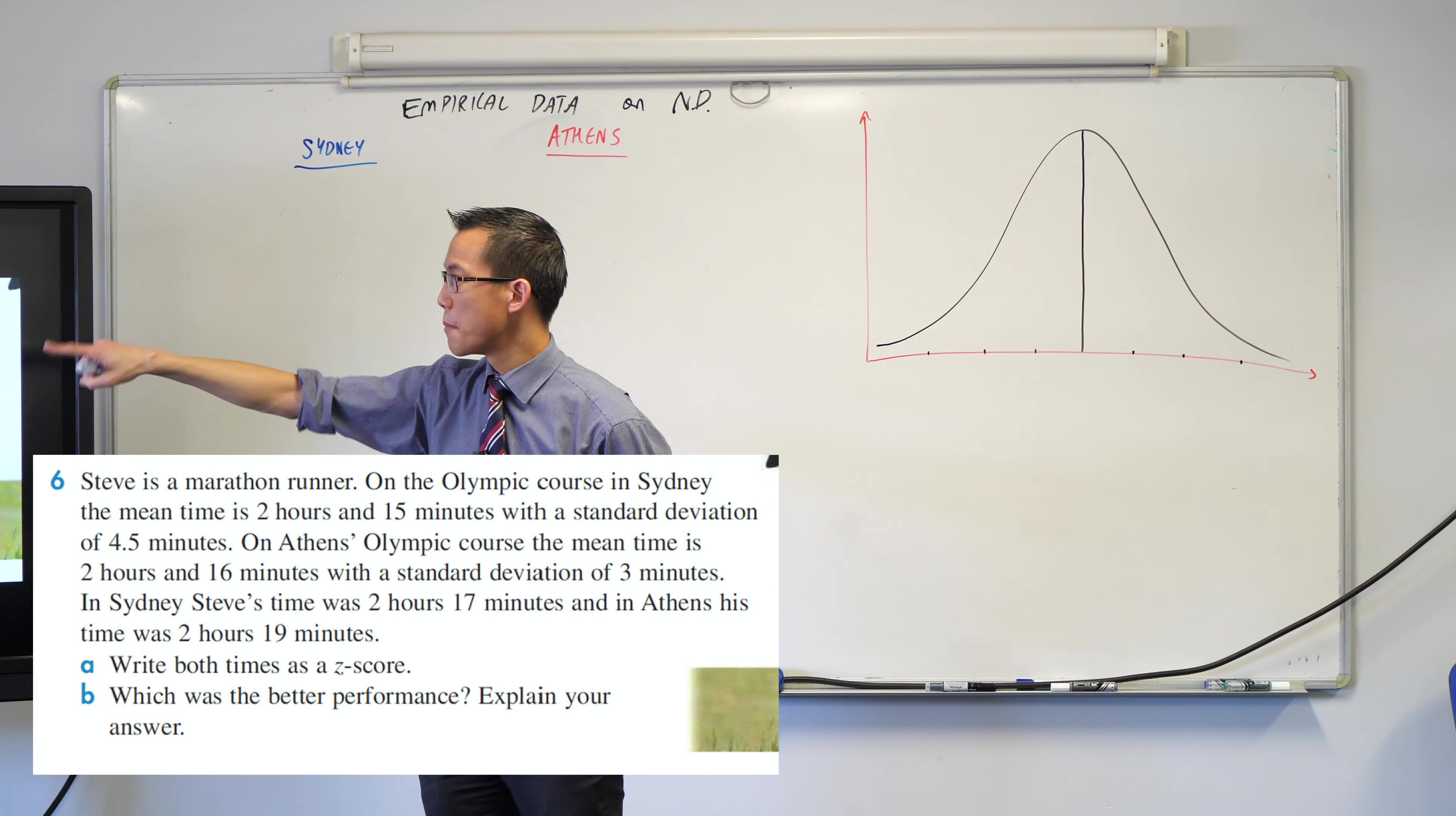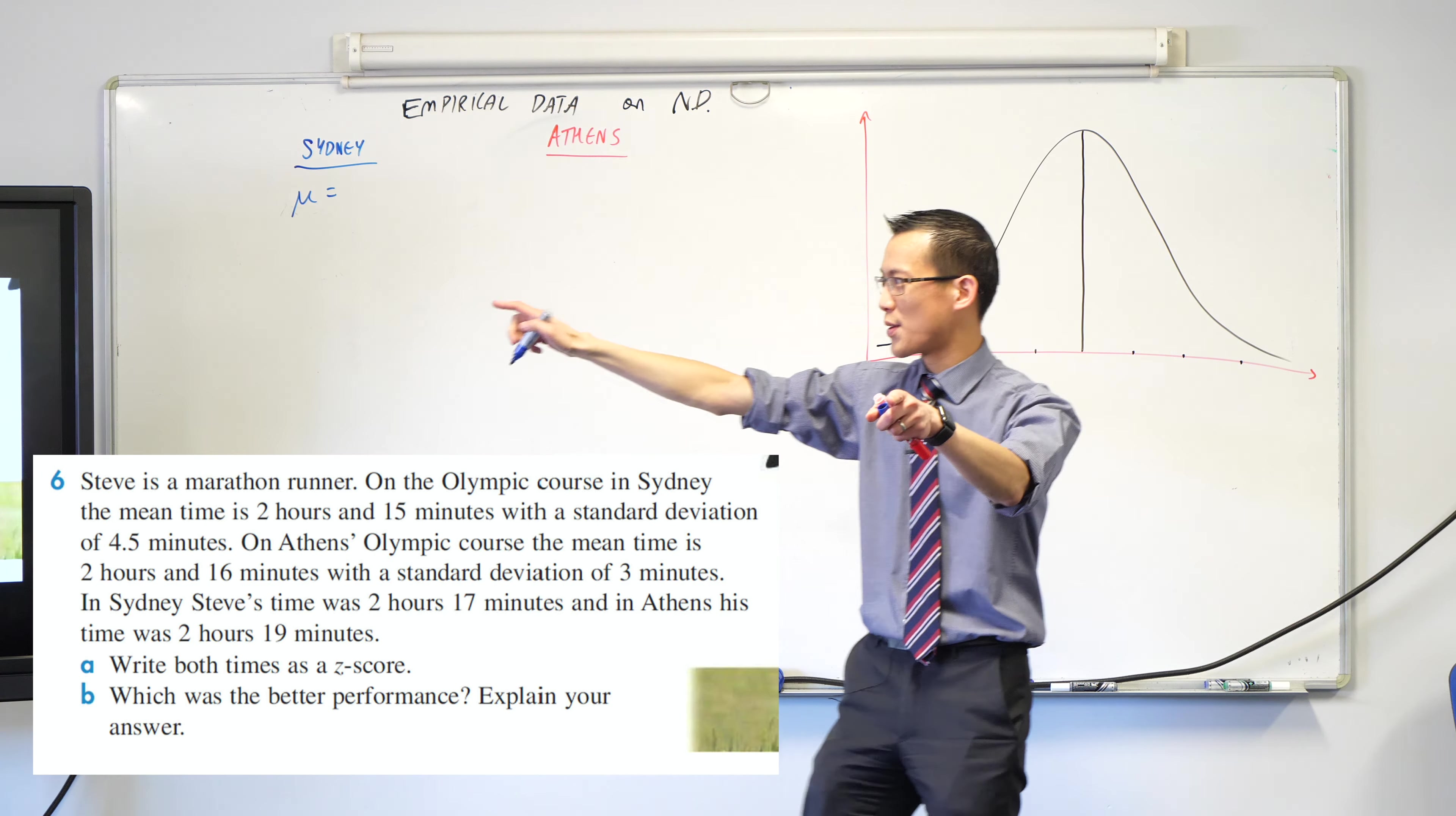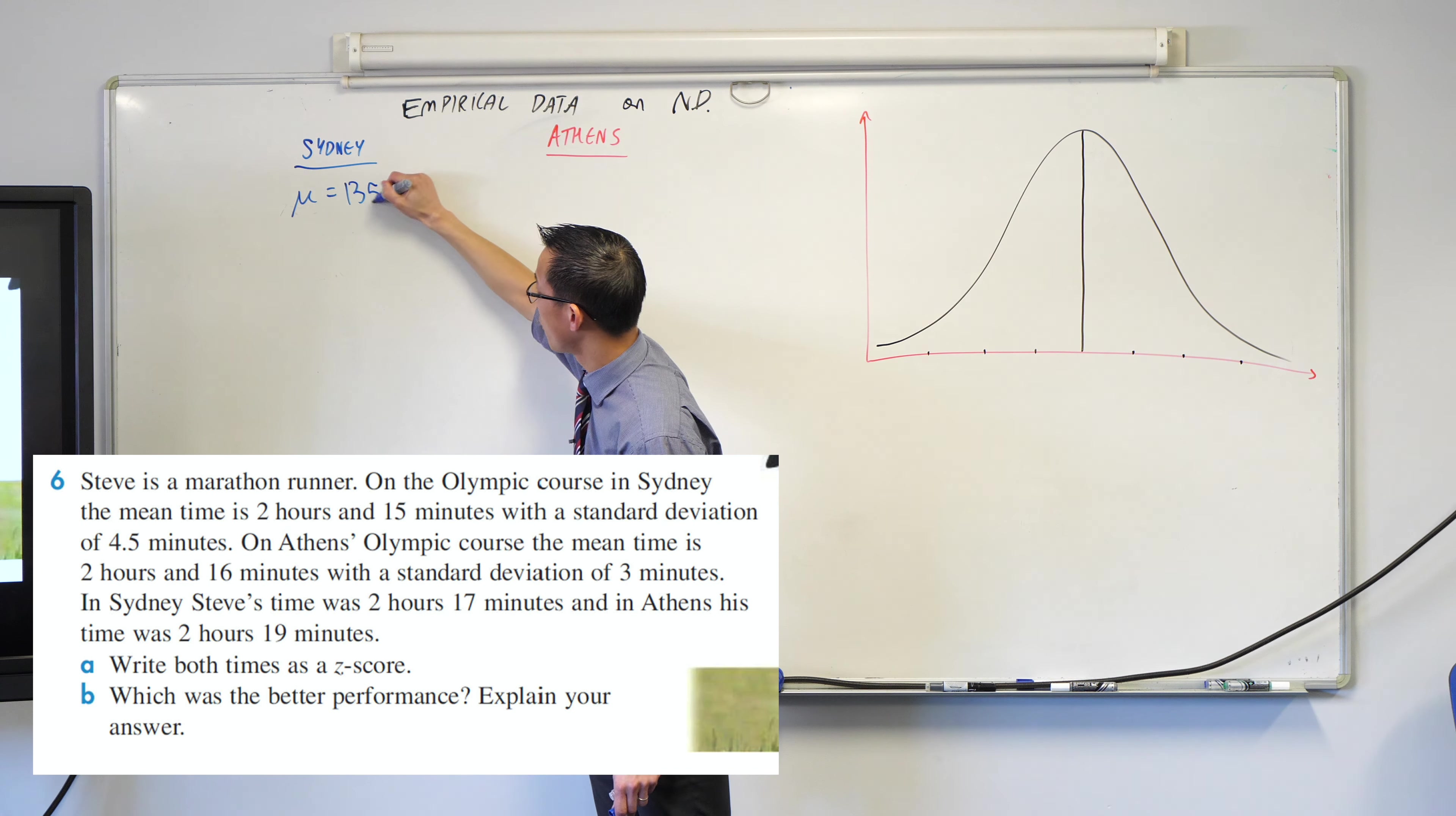We're thinking about Steve, the marathon runner. He has these times for running a marathon. Before we get to his times, the mean time in Sydney is 2 hours 15 minutes. Which Greek letter do we use for mean? Mu, very good. Now, later the question talks in minutes, so let's convert. 2 hours is 120 minutes, so that makes 135 minutes.